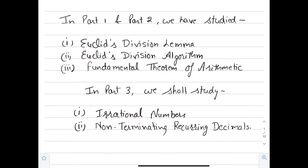In Part 1 and Part 2, we have studied Euclid's Division Lemma, Euclid's Division Algorithm, and the Fundamental Theorem of Arithmetic. Now, in Part 3, we shall study Irrational Numbers and Non-Terminating Recurring Decimals.